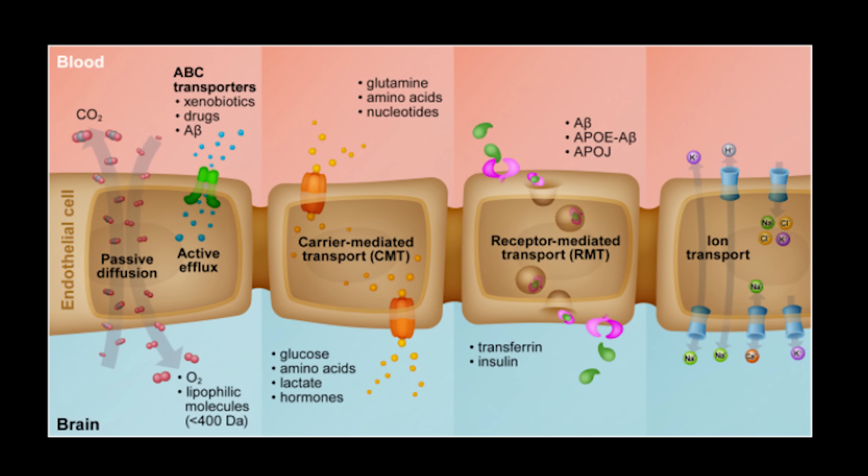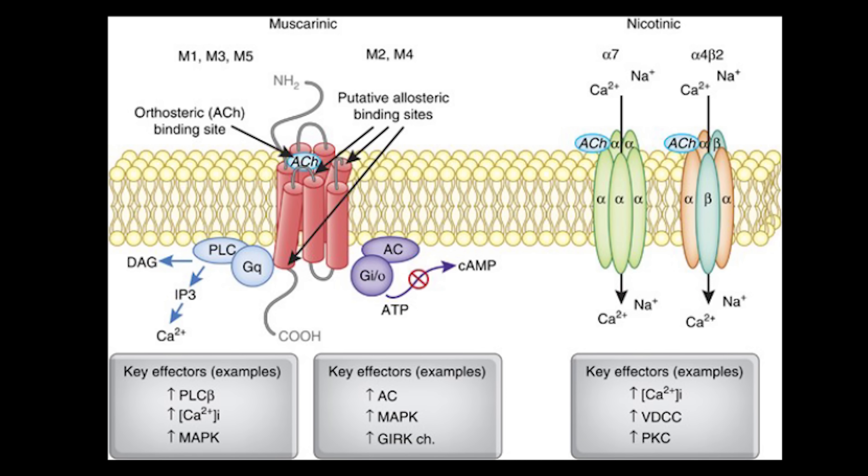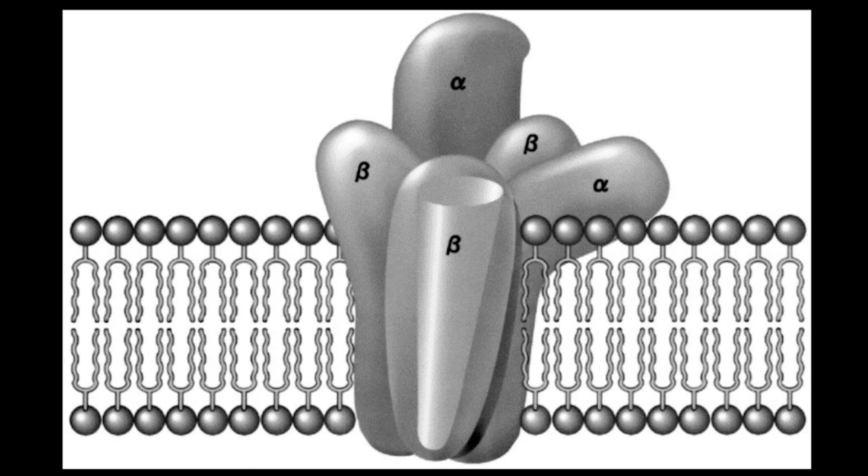In general, arecoline readily crosses the blood-brain barrier and has multiple psychoactive properties, acting as a non-selective partial agonist of muscarinic and nicotinic acetylcholine receptors at their alpha-4/beta-2 and alpha-6/beta-3 subunits. My god.